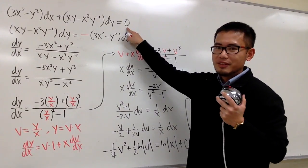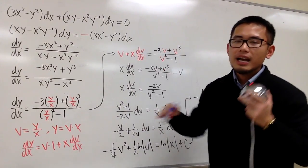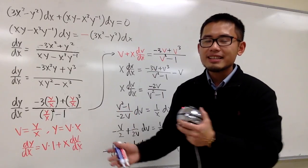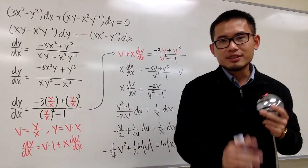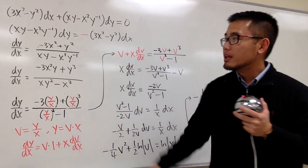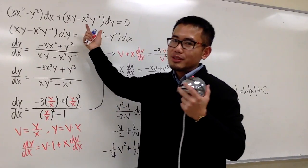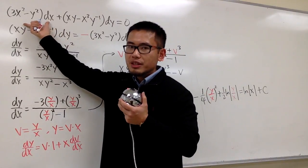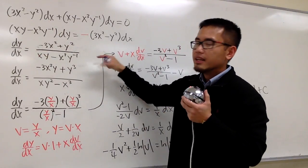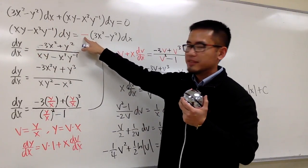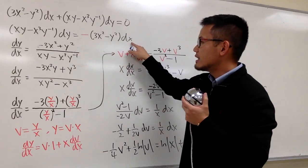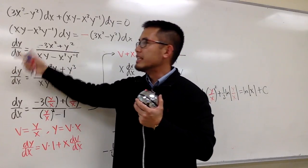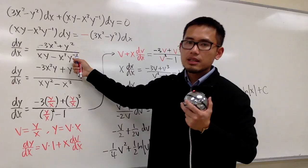I'm going to show you how to solve this homogeneous differential equation. The deal is that we'll first isolate the dy/dx on one side and put everything else on the other. However, this is what they give us, so we can first move this term to the right-hand side — it becomes negative. Then we can divide dx on both sides and then divide by the expression on both sides.